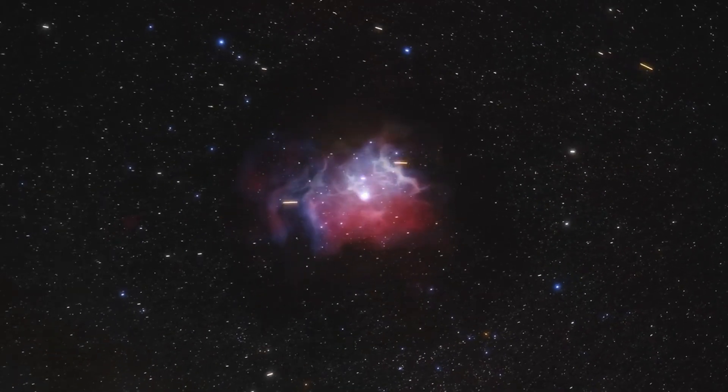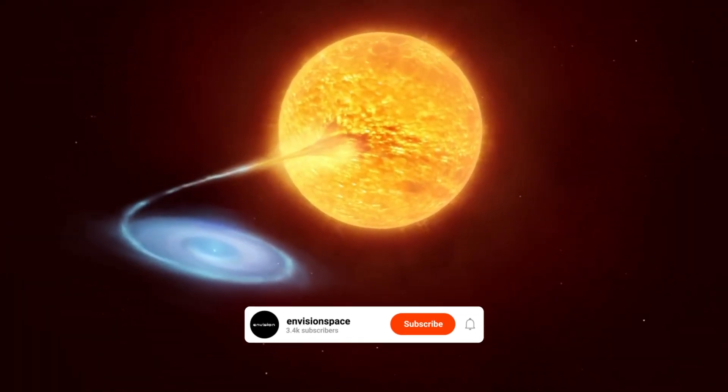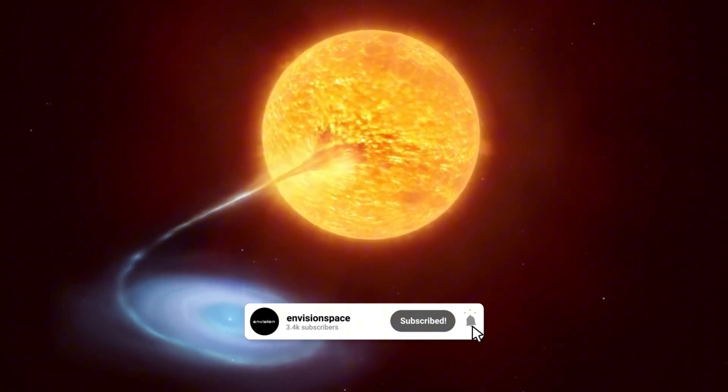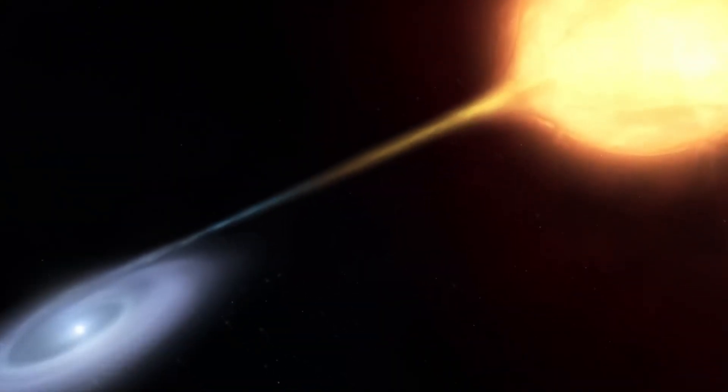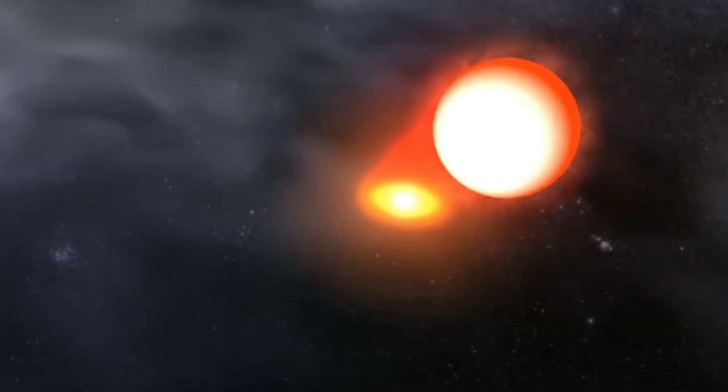This system is located in the small constellation Corona Borealis, or the Northern Crown, some 3,000 light years away from us. The T. Coroni Borealis system consists of two objects. One, a red giant on the verge of dying, and another, a white dwarf, a dead star.